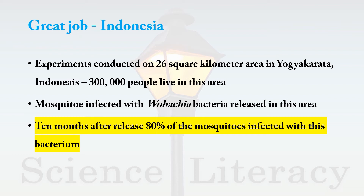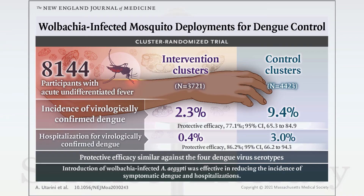Here is the great outcome of this experiment: comparing dengue-transmitting mosquitoes having bacterial infection with those having no bacterial infection, there was above 87 percent reduction in dengue virus infection in areas where mosquitoes were infected with the Wolbachia bacterium.